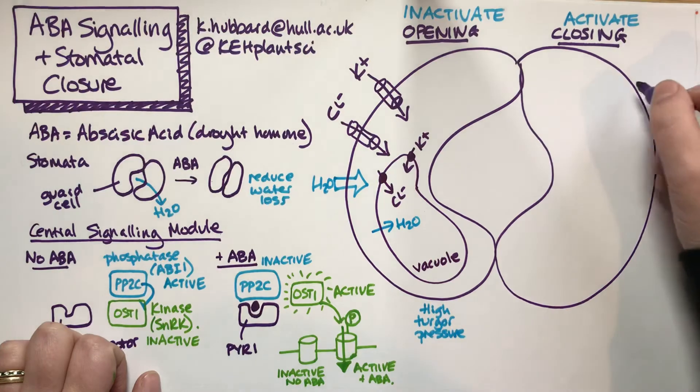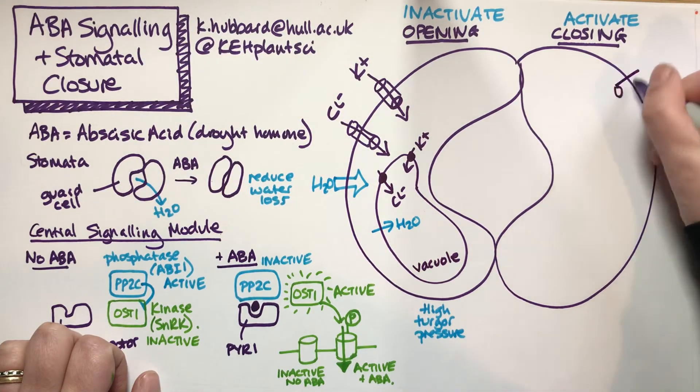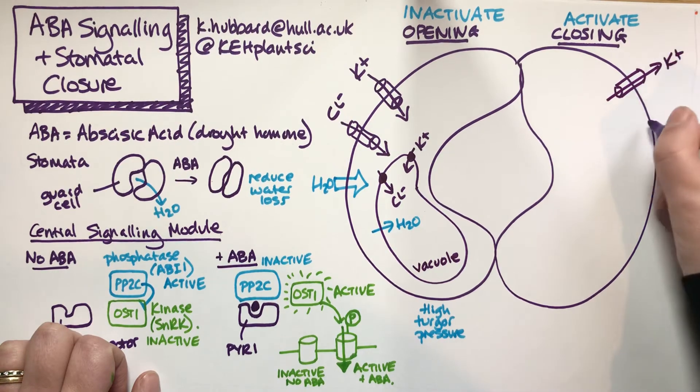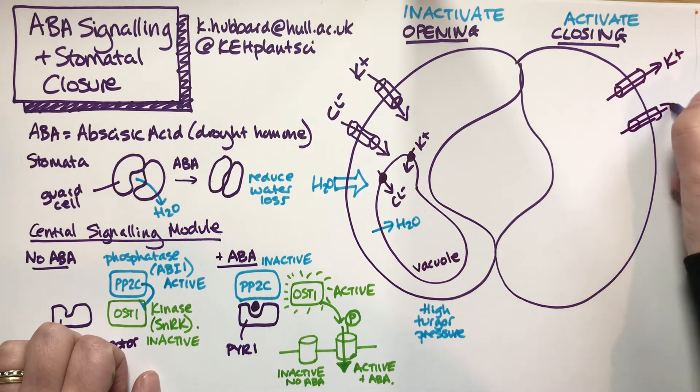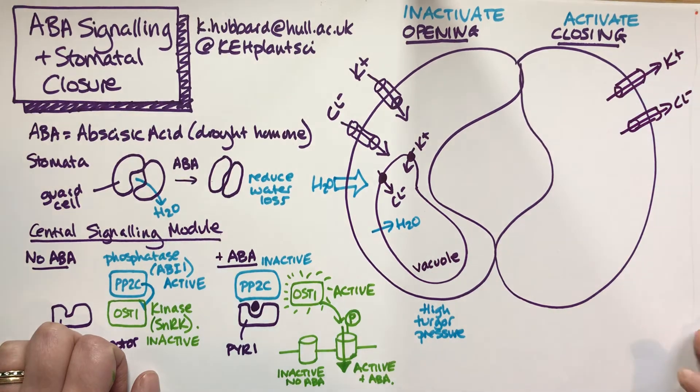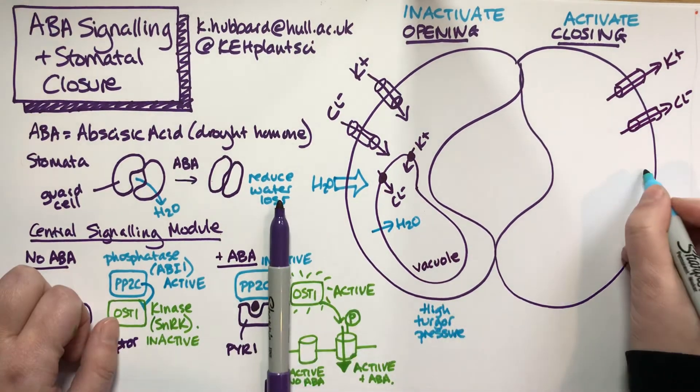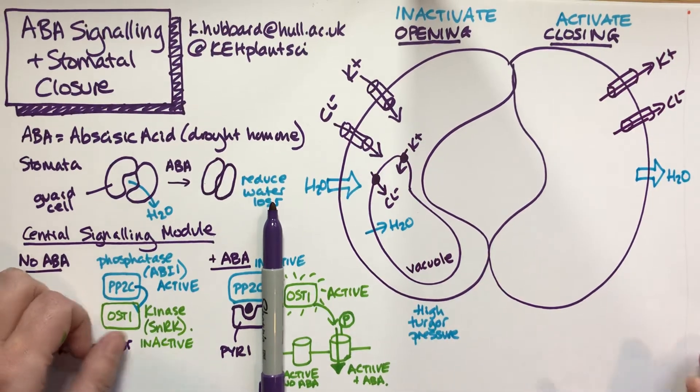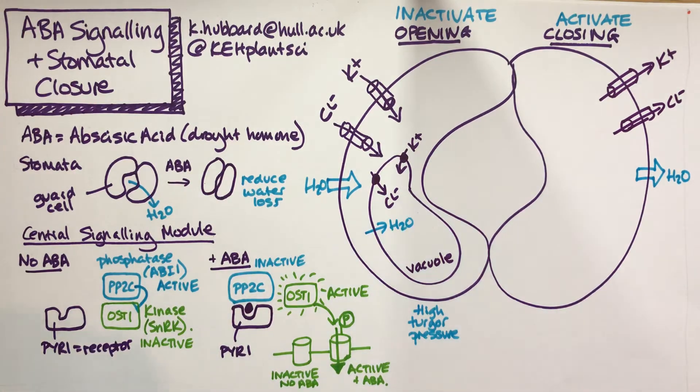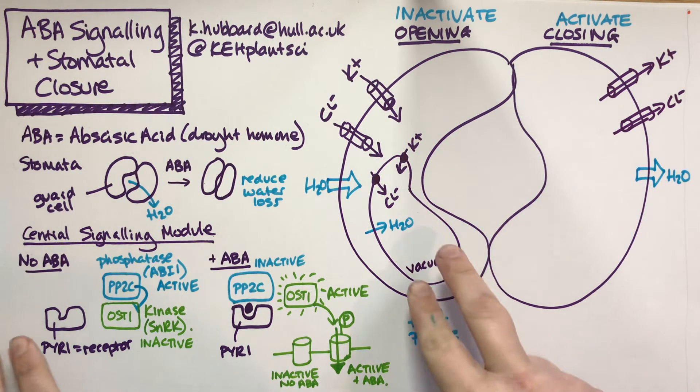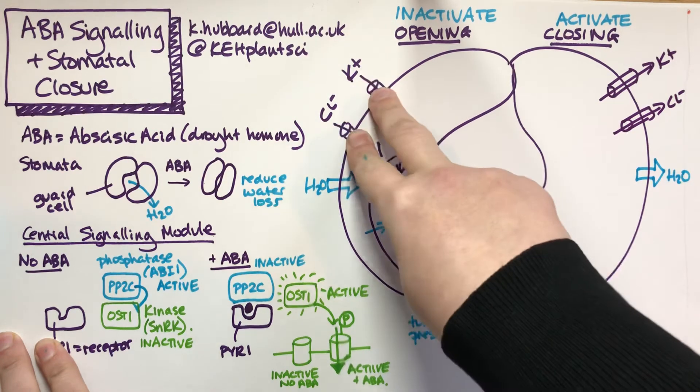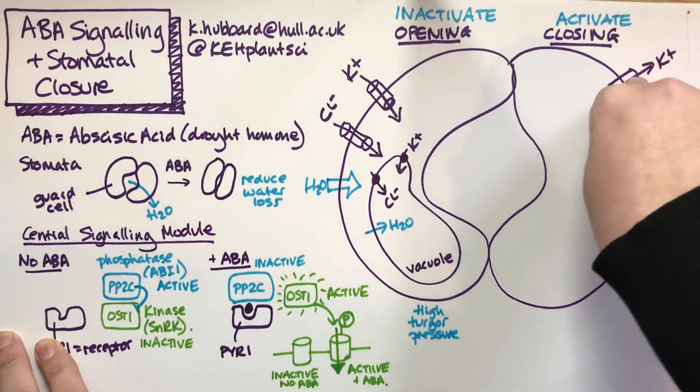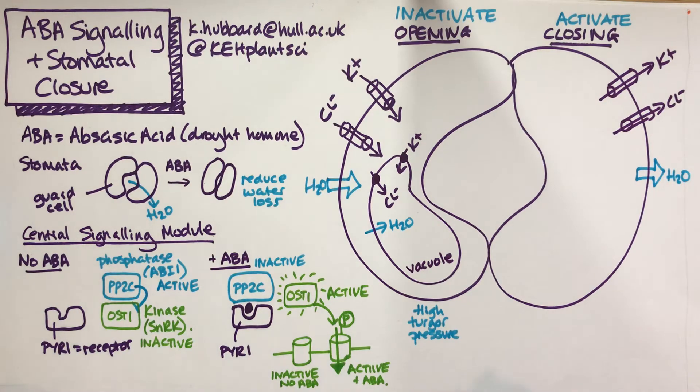We also need to activate closure, so we need an efflux of potassium and an efflux of chloride. If we activate those, the water should follow. We need the same things happening at the vacuole, but I'm not showing it for clarity. To regulate the system, we need to switch off these ion channels and open the efflux channels over here.